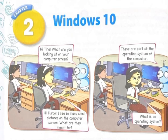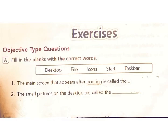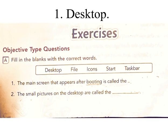Lesson 2: Windows 10 Exercises. Objective type questions. A: Fill in the blanks with the correct words. Word bank: desktop, file, icons, start, taskbar. Question 1: The main screen that appears after booting is called the desktop. Answer: desktop. Question 2: The small pictures on the desktop are called the icons. Answer: icons.